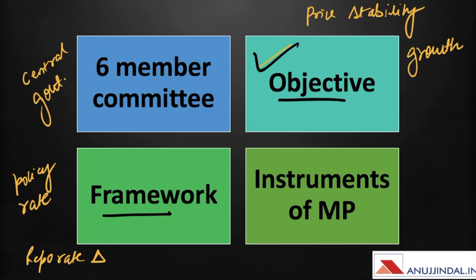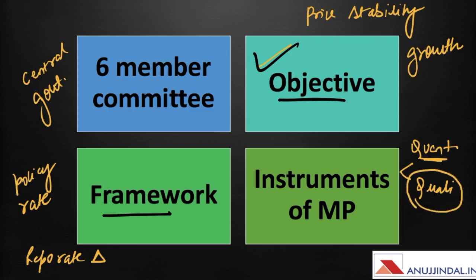There are two kinds of monetary policy instruments. First are quantitative instruments, also known as general or indirect, because once a monetary policy sets the repo rate it affects the entire financial system as a whole. Second are qualitative instruments, which are selective or direct, targeted at a particular institution. Qualitative instruments include moralization, while quantitative instruments include CRR, SLR, open market operations, bank rate, and repo rate.